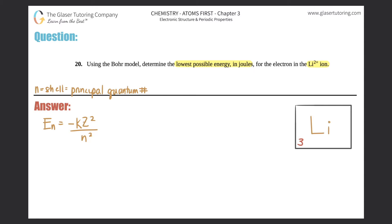Well, remember k is a constant number. It's the Rydberg constant, which is 2.179 times 10 to the negative 18 joules. So we know what the k is.